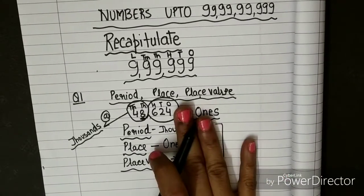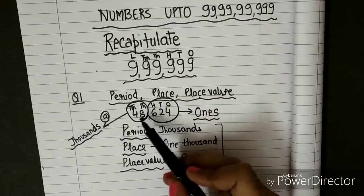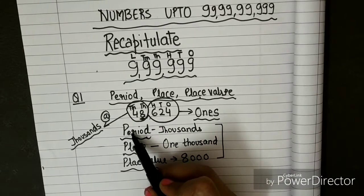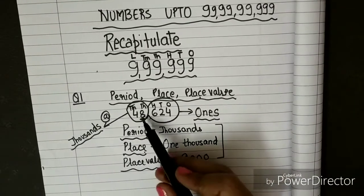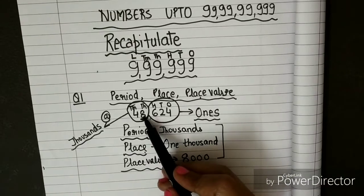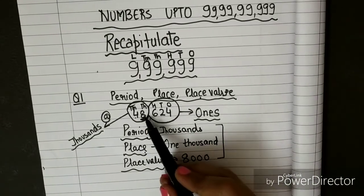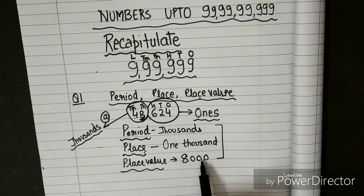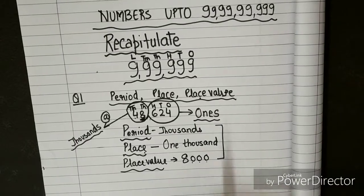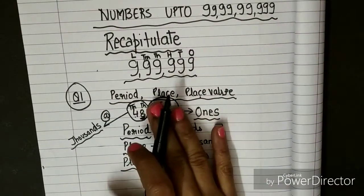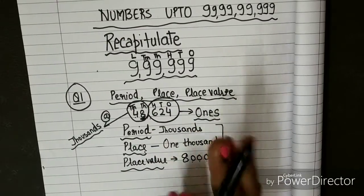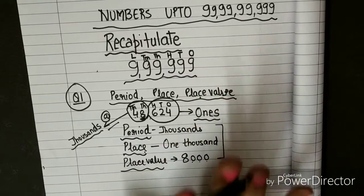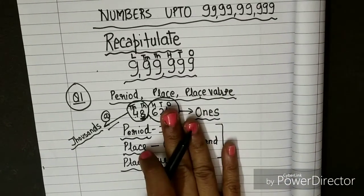So I have revised question number 1, part A with you. For the digit 8, you write: period — which family it belongs to; place — its position, which is thousands or 1000; and value — put zeros, so 8 followed by three zeros: 8000. There are 6 parts — A, B, C, D, E, F — and I have done 1 part for you. You have to do 5 more parts for question number 1.